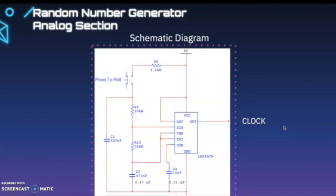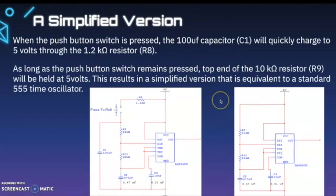Let's look at a simplified version. When the push button switch is pressed, we have a 100 microfarad capacitor, that's C1, that quickly charges to five volts through the 1.2 kiloohm resistor. When this push button closes, voltage comes through and zips down to C1. As long as the push button is pressed, the top end of the 10k resistor is held at five volts. This results in a simplified version equivalent to a standard 555 timer oscillation.